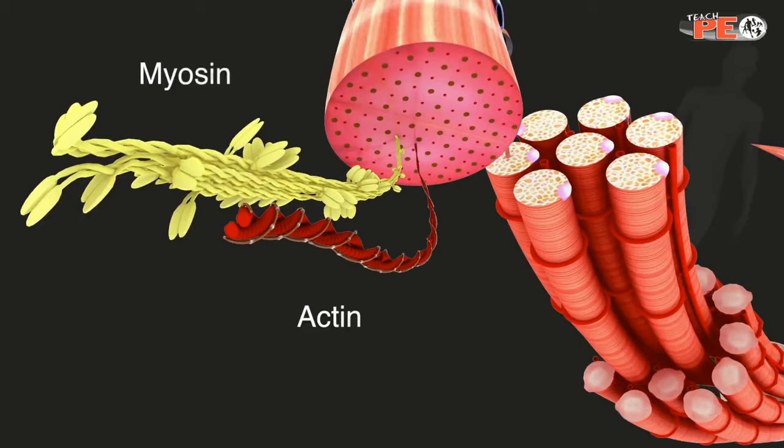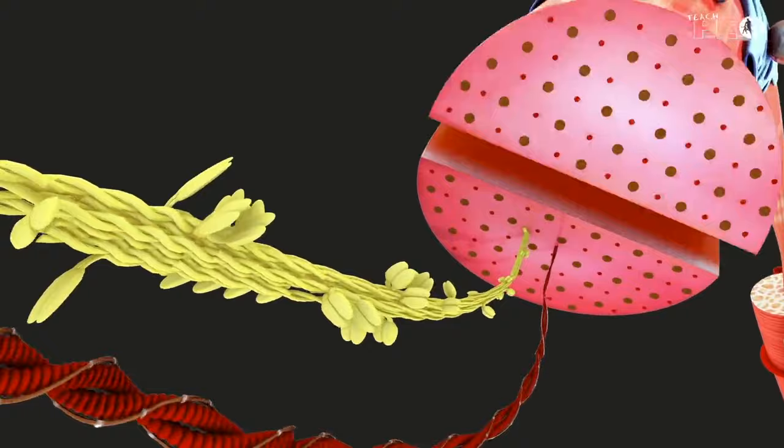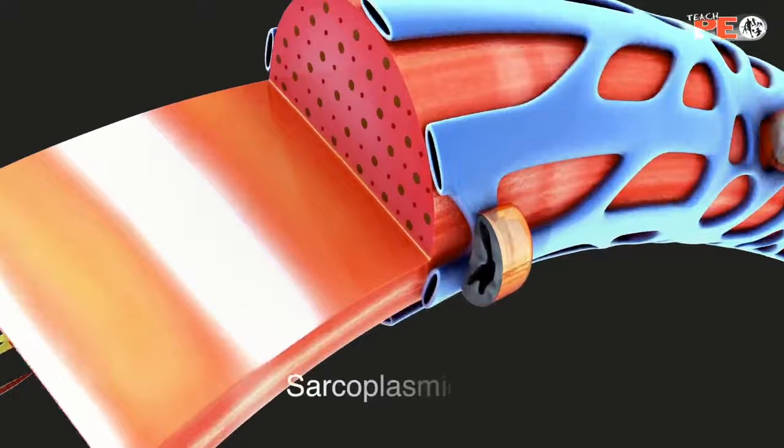Surrounding the myofibril, there is a network of tubules and channels called the sarcoplasmic reticulum, where calcium is stored. Each myofibril can be broken down into functional repeating segments called sarcomeres.